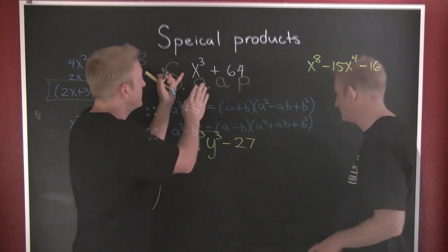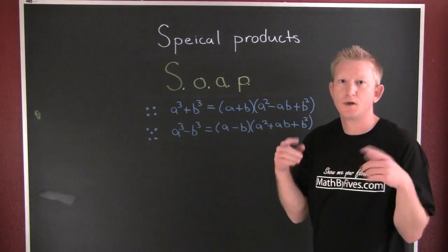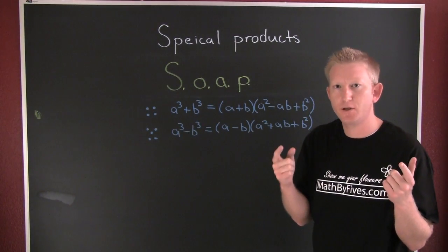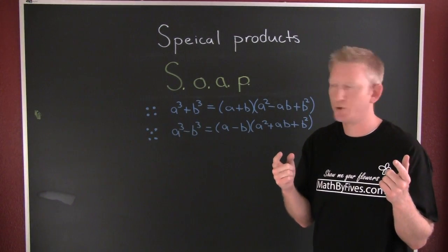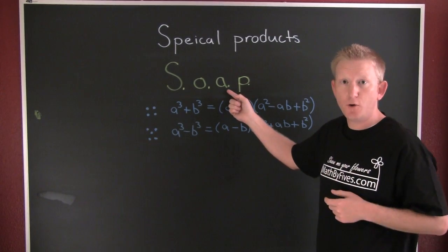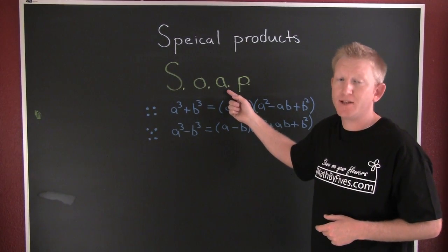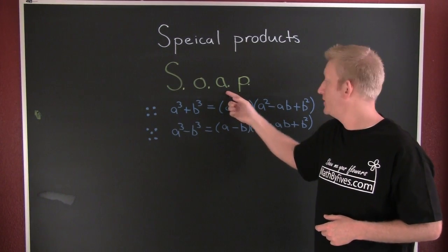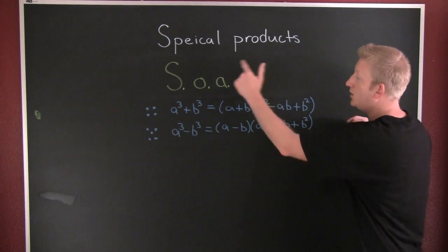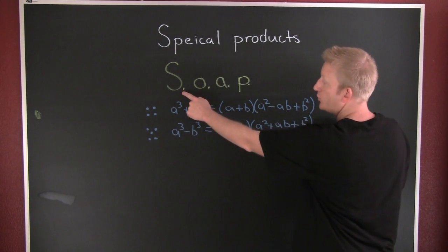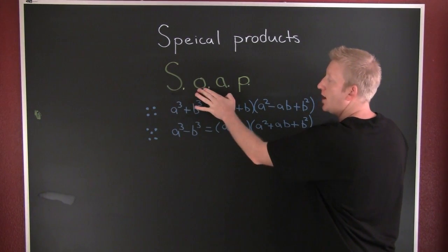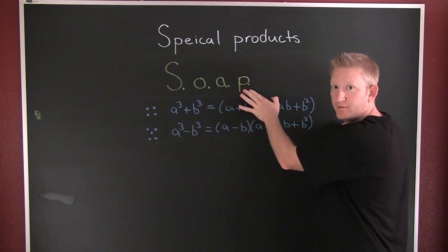Which one is this? Sums and differences of cubes follow a very clean rule — the rule of SOAP. One way to remember the signage on these cubics is SOAP: Same, Opposite, Always Positive. Referring to the signage: they're the same, opposite, always positive.